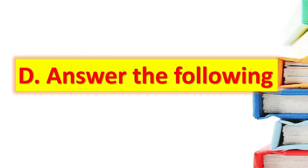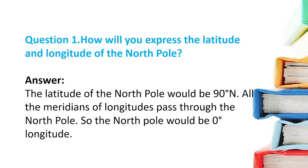Question D: Answer the following. Question 1: How will you express the latitude and longitude of the north pole? The latitude of the north pole is 90 degrees. Since all meridians of longitude pass through the north pole, it would be 0 longitude.